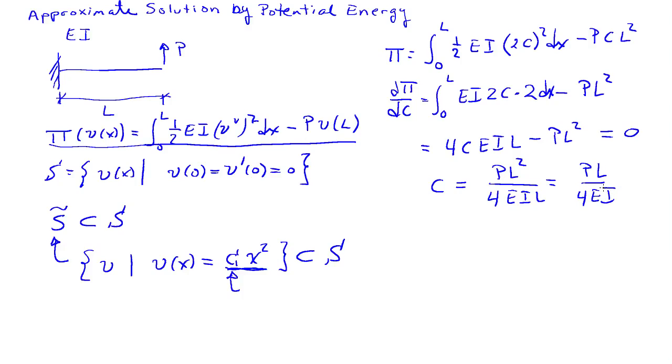Plugging that back in with the functional form, the approximation V approx equals PL times X squared over 4EI.